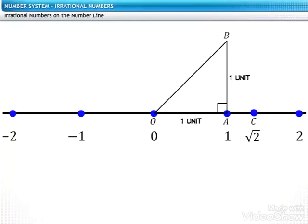Similarly, we can represent square root of 3 on the number line. Let's see how. In the same figure, through C, draw CD perpendicular of 1 unit length. Join OD to get right-angled triangle OCD.